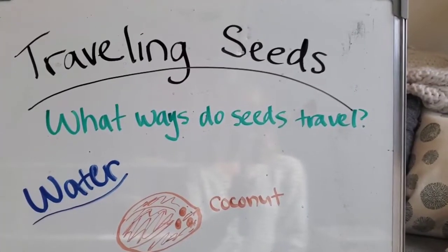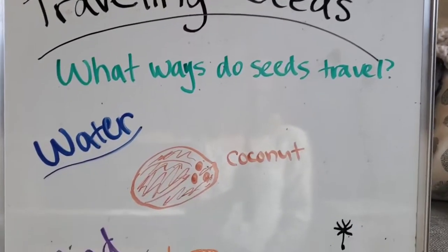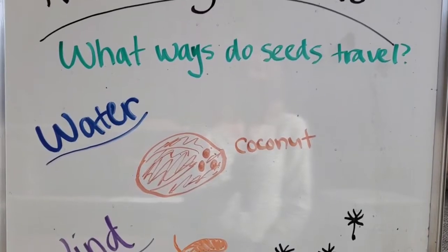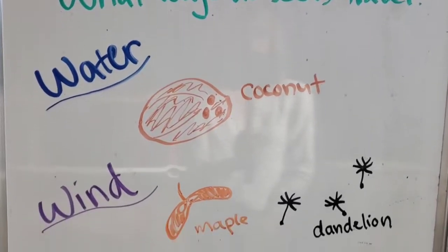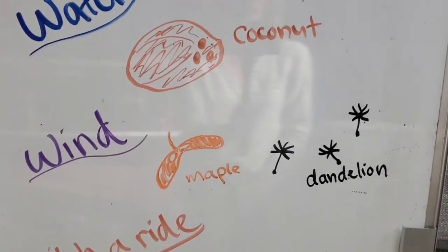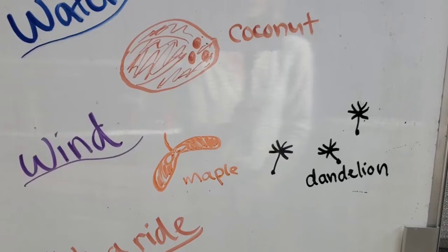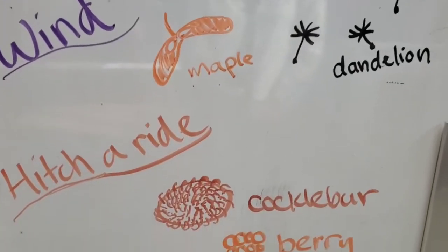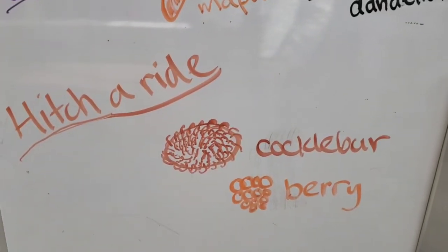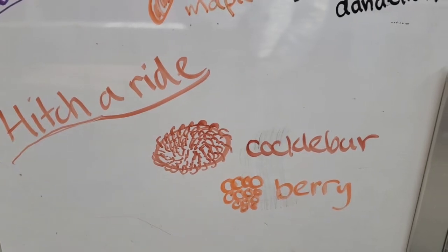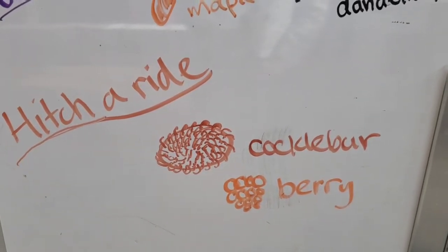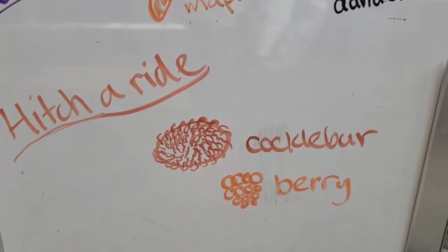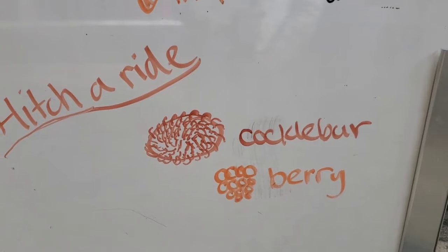Have you ever seen a seed traveling around? Does it take an airplane or a car? No! How do seeds travel? There are three main ways we'll talk about today. Seeds might use water to float around like a coconut, they might fly around on the wind like a maple seed or dandelion, or they might hitch a ride on an animal like a cocklebur, or even hitch a ride through an animal's stomach like a berry.